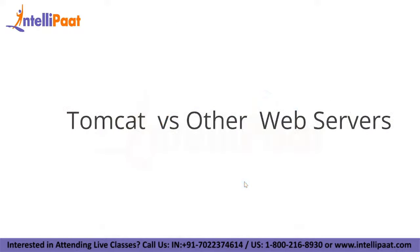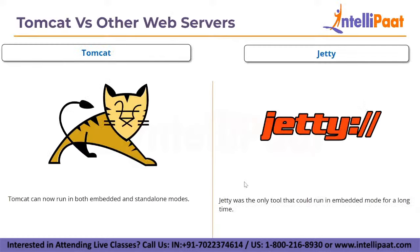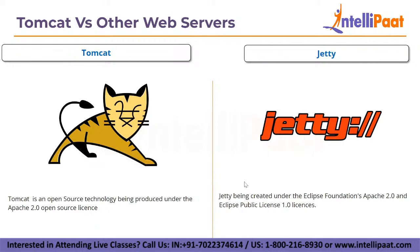Now let's discuss Tomcat versus other web servers. When compared to Jetty, both are frequently compared as lightweight servers. Jetty is a servlet container and HTTP server frequently used as an embedded server. Jetty was the only tool that could run in embedded mode for a long period of time, but Tomcat can now run in both embedded and standalone modes. Both are open source — Tomcat under Apache 2.0, and Jetty under the Eclipse Foundation's Apache 2.0 and Eclipse Public License 1.0. Tomcat has a high market share, focuses on being up to date with the latest specifications, and is well documented. Jetty prioritizes user community needs, has a small memory footprint, and is also embeddable.